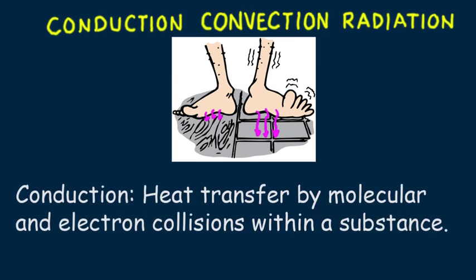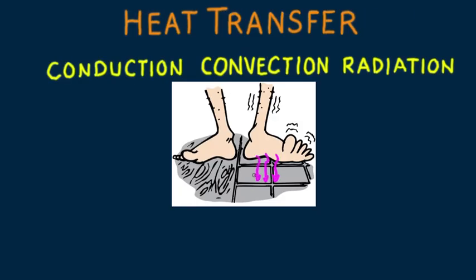So we see that conduction is heat transfer by molecular and electron collisions within a substance. Conduction occurs when fast moving molecules on the surface of your feet bump into slower moving molecules in the tile or wood surface. Heat energy flows faster from your feet to the colder tile than to the colder wood. So different materials conduct heat at different rates.